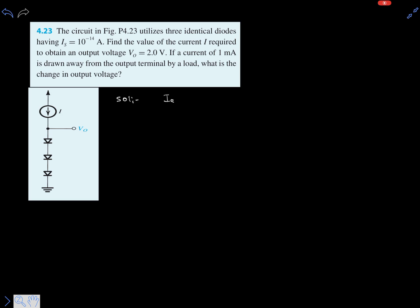It is given that Is equals 10 to the power of minus 14. We know the diode current equation: I equals Is multiplied by e to the power of Vd over Vt, minus 1. Since the exponential term is very large compared to 1, we can omit the 1, so the equation becomes I equals Is multiplied by the exponential term e to the power of V over Vt.